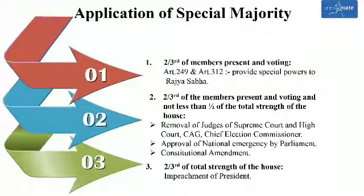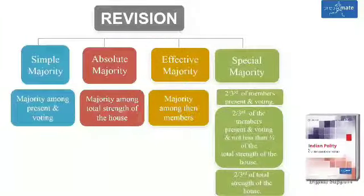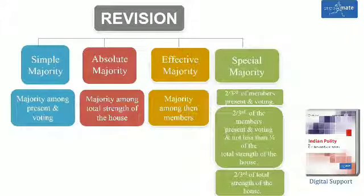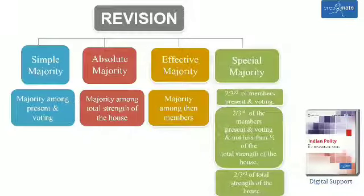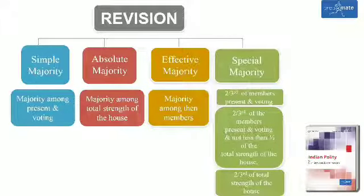Let us quickly revise the types of majorities. Simple Majority: majority among members present and voting. Absolute Majority: majority among total strength of the House. Effective Majority: majority among then-members. Special Majority is of three types: 2/3 of the members present and voting; 2/3 of the members present and voting and not less than half of the total strength of the House; and 2/3 of the total strength of the House.